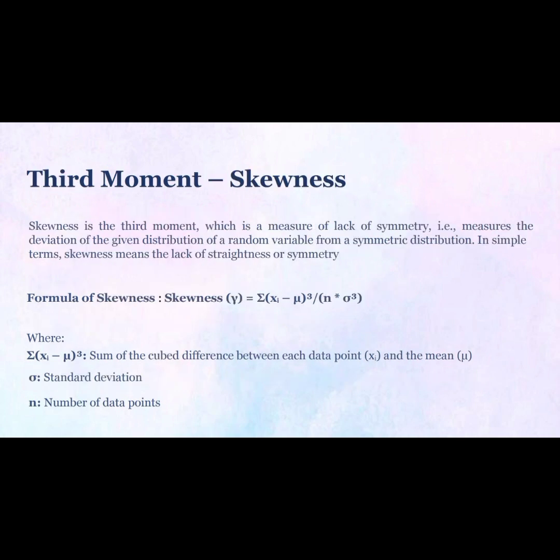Third moment: skewness. Skewness is the third moment, which is a measure of lack of symmetry — that is, it measures the deviation of the given distribution of a random variable from a symmetric distribution. In simple terms, skewness means the lack of straightness or symmetry.